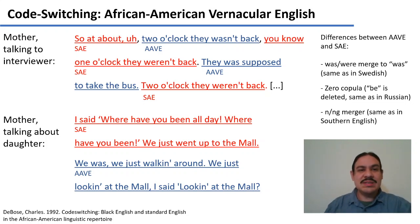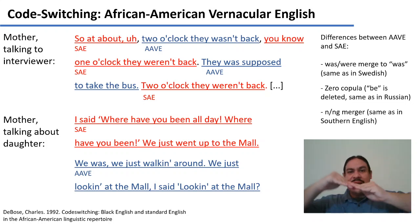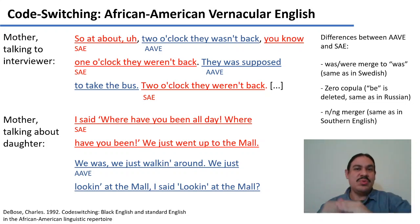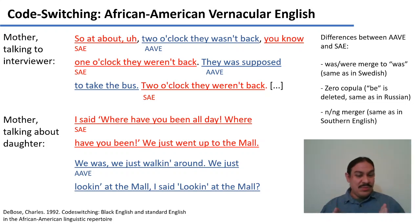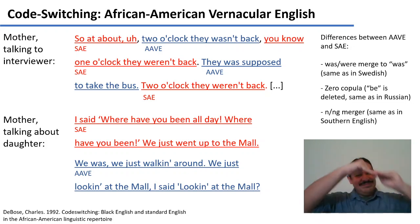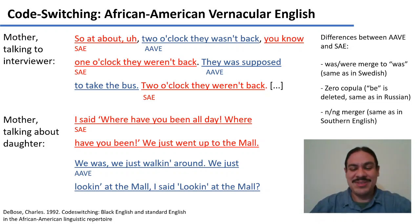As you can see, you can have two languages, or two variants of one language, where you go back and forth between them. This is code switching. So far we have multilingualism — two languages — and code switching — two languages going back and forth.